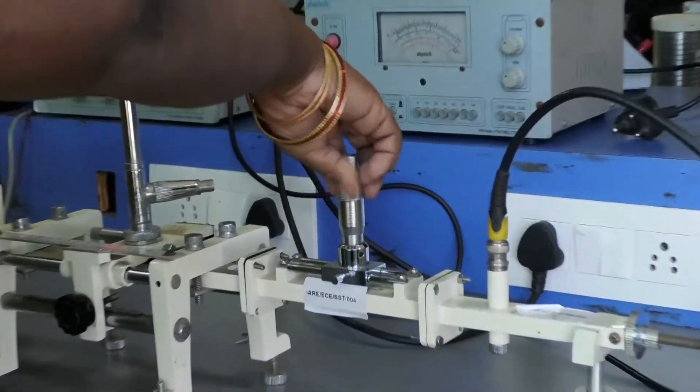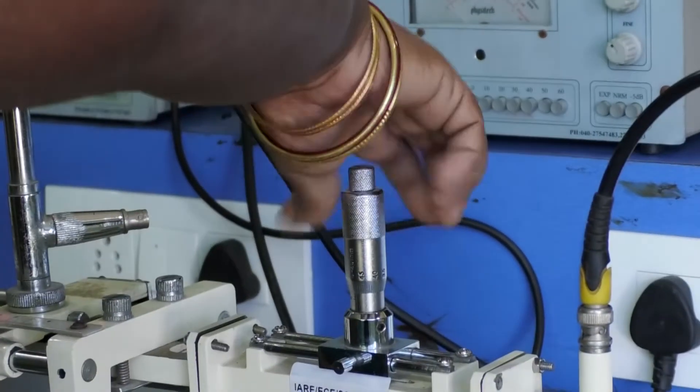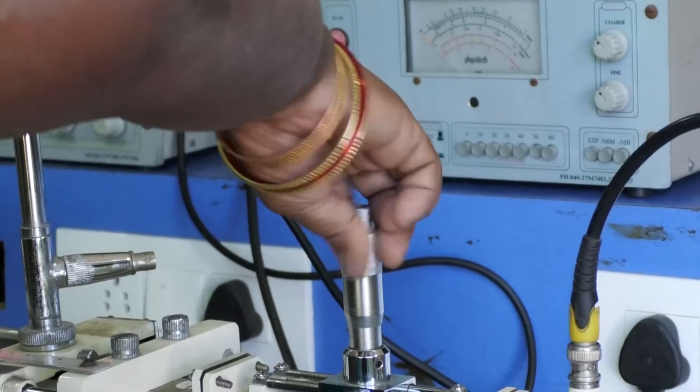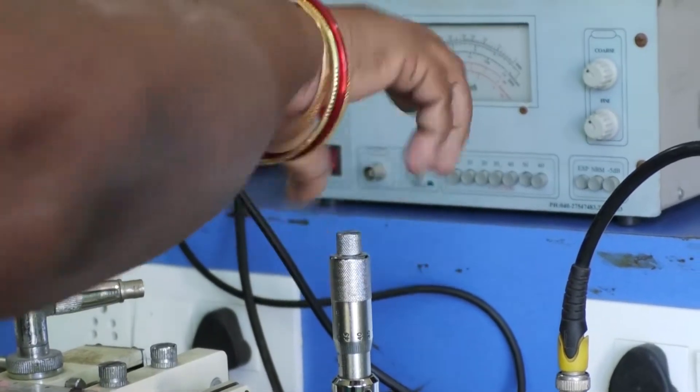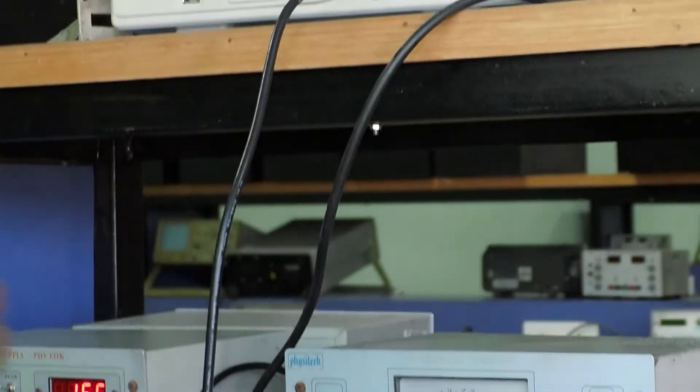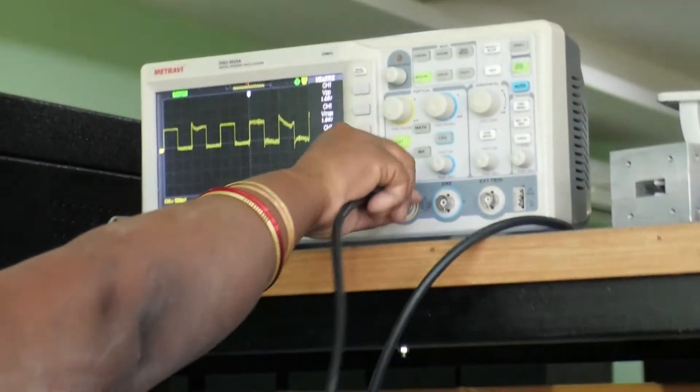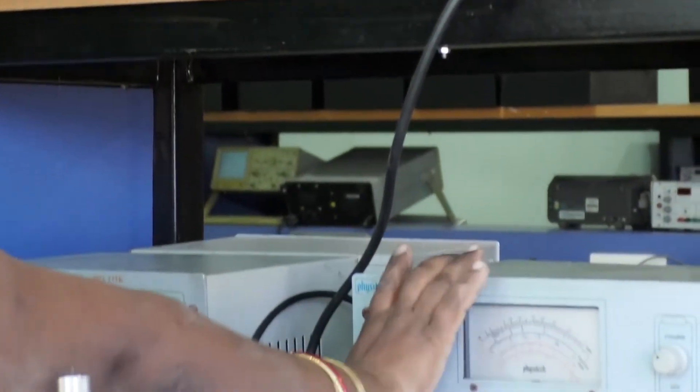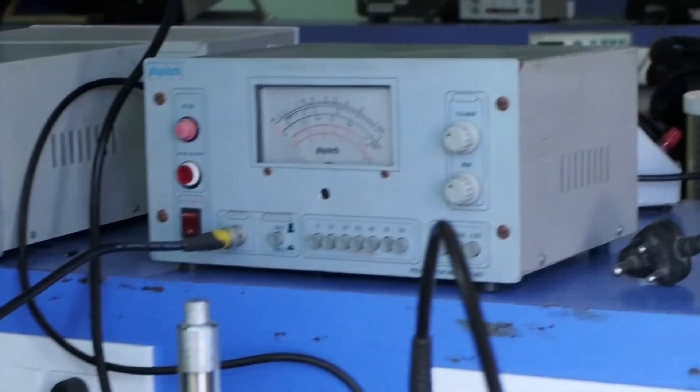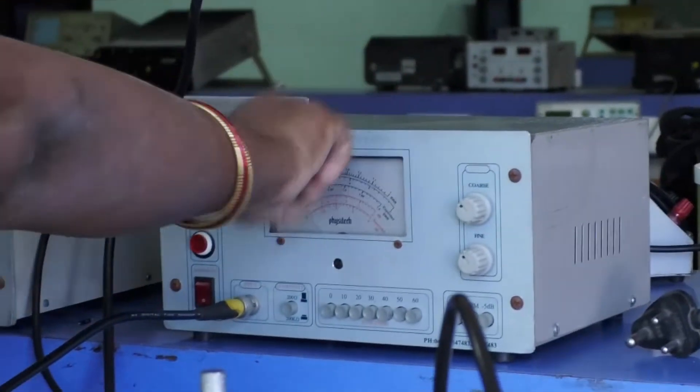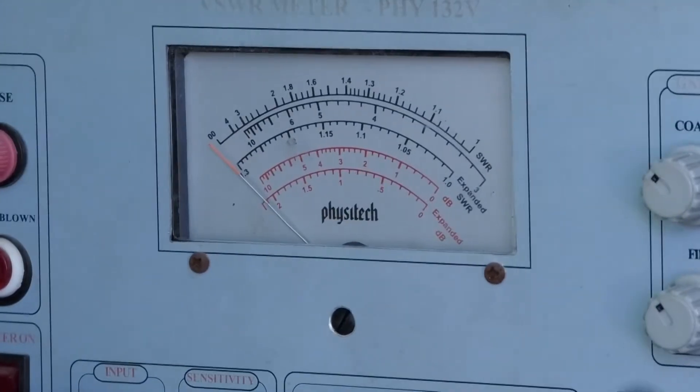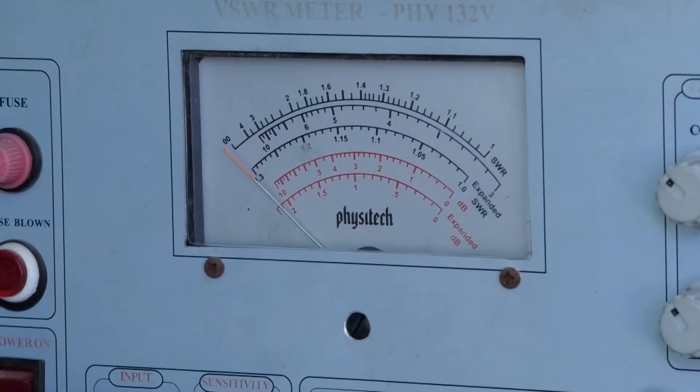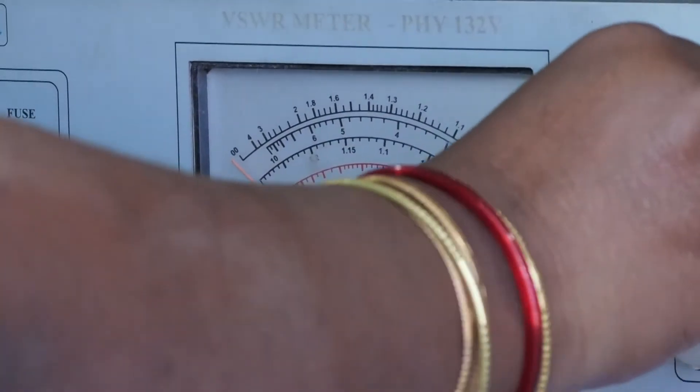In between slotted line section and diode detector, place the SS tuner. Now connect the CRO probe to VSWR meter and vary the repeller voltage to obtain the VSWR reading as 1.